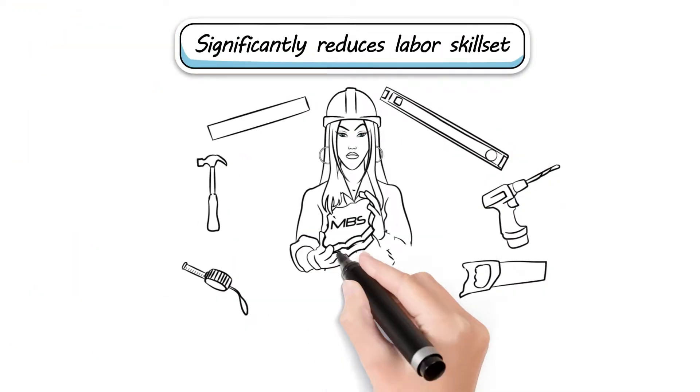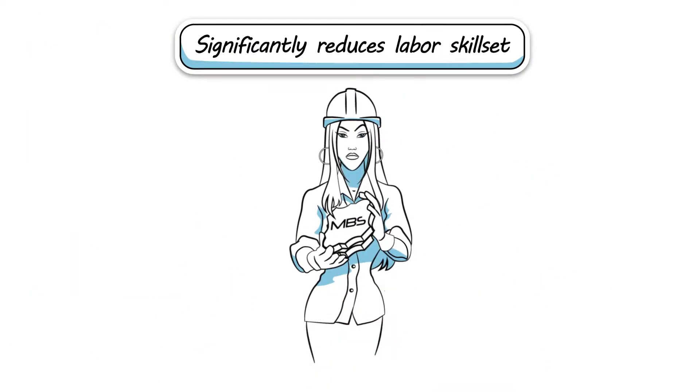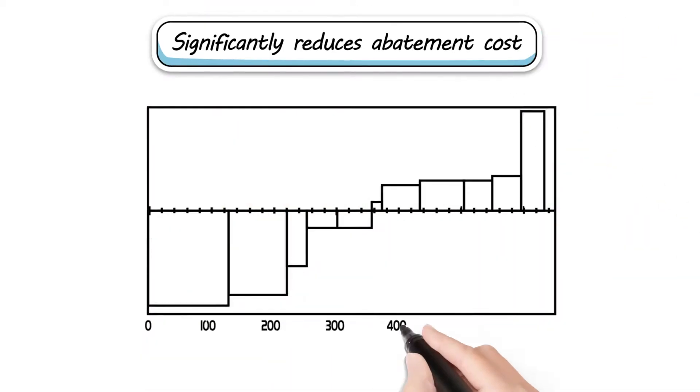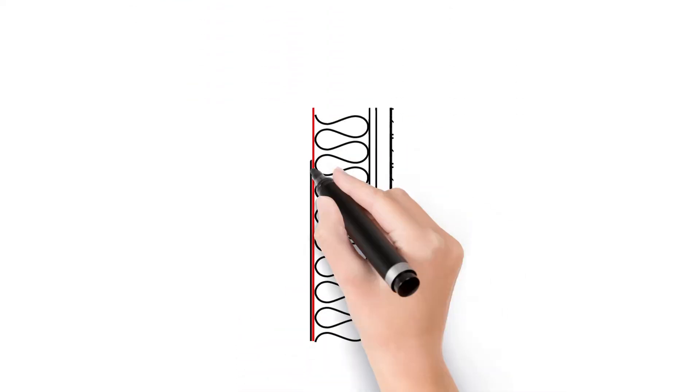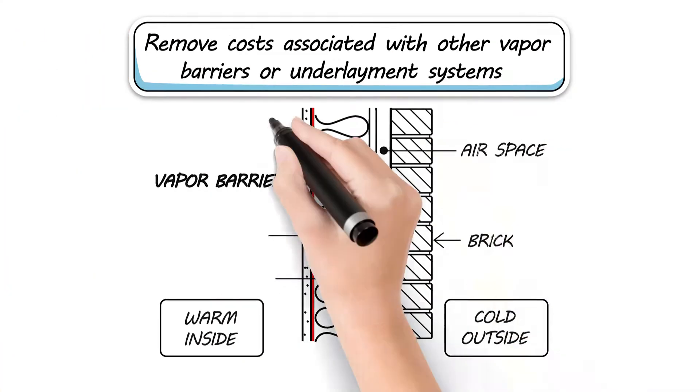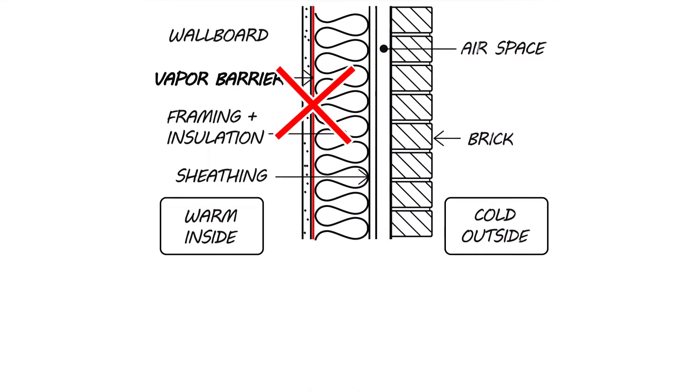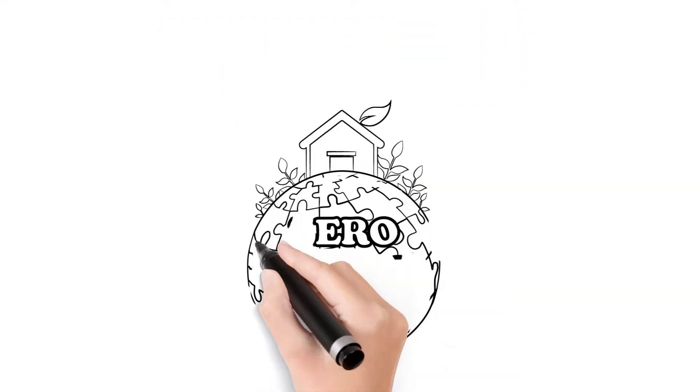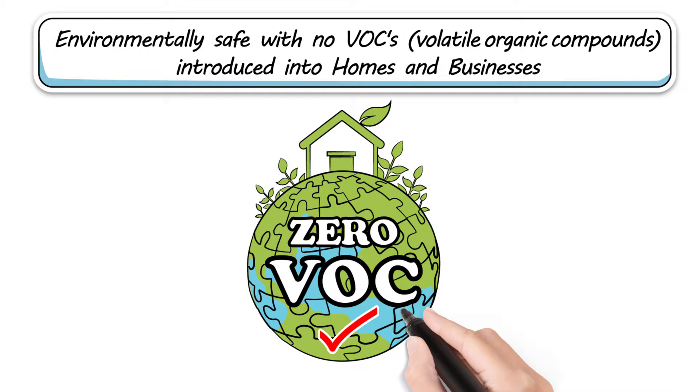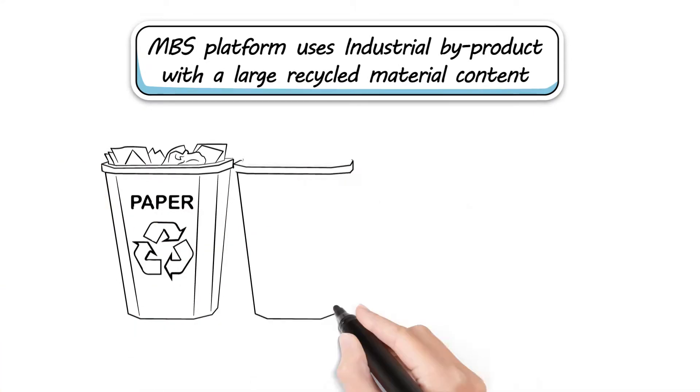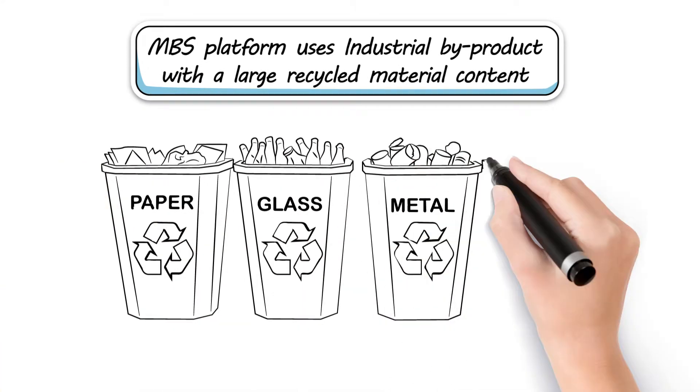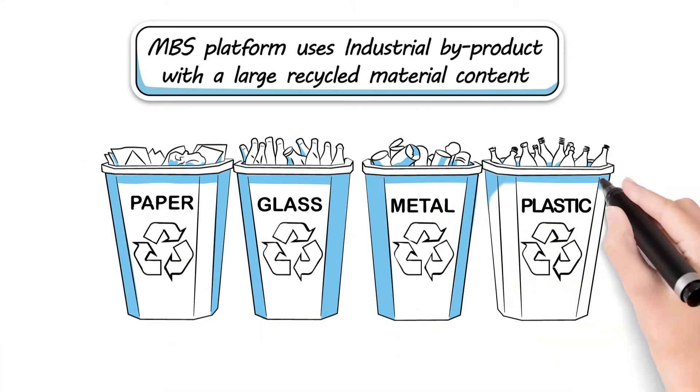Significantly reduces labor skill set, significantly reduces abatement cost, removes costs associated with other vapor barriers or underlayment systems, environmentally safe with no VOCs introduced into homes and businesses. MBS Platform uses industrial byproduct with large recycled material content.